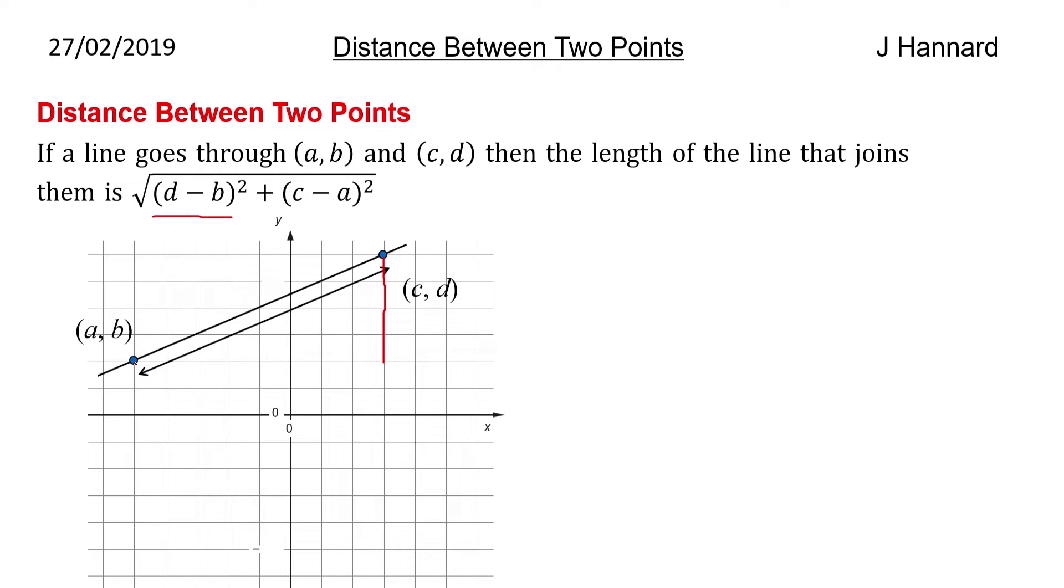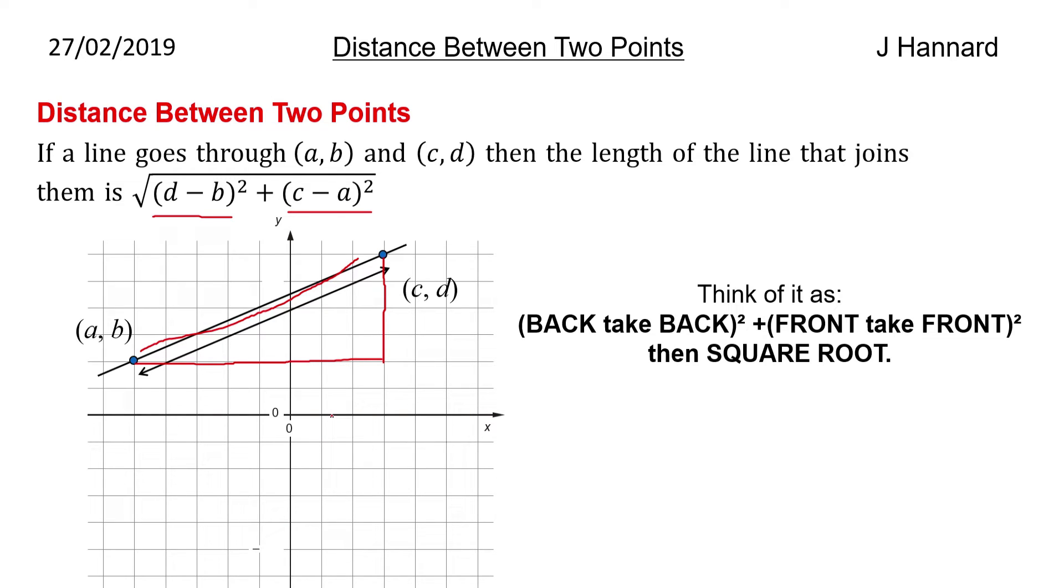If you want to think of it this way, the height between that point and that point is going to be d minus b, which is this part of the equation. The length between these two points is going to be c minus a. If you think of Pythagoras, this line is c minus a, this line is d minus b, so by Pythagoras we'll square them both and square root them. The way you want to think of this is back take back squared plus front take front squared.